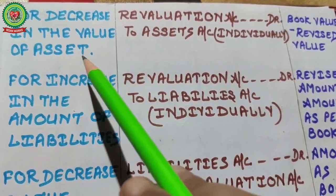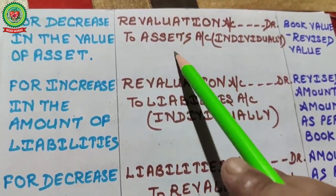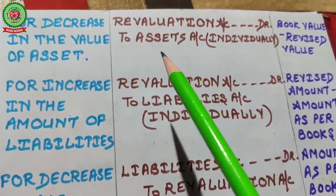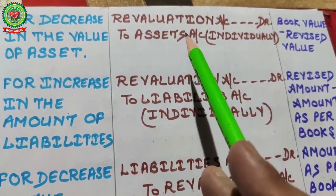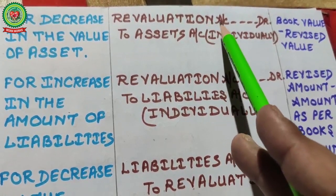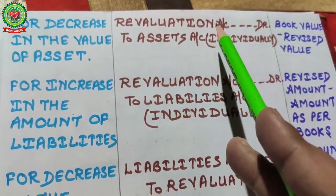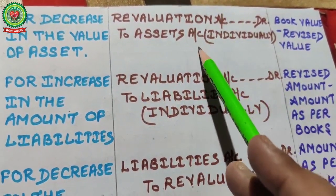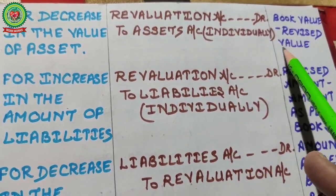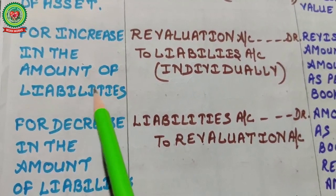For decrease in the value of assets — if the book value is 40,000 and the realizable selling price is 20,000, the difference of 20,000 is a capital loss. The entry is: Revaluation Account debited, Asset Account credited. Revaluation account is debited because debit means all expenses and losses. The amount is book value minus revised value.